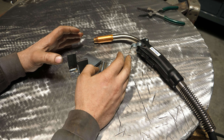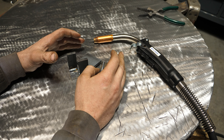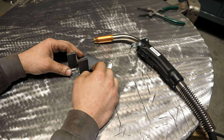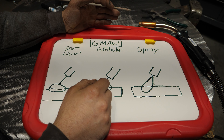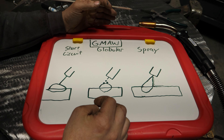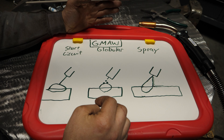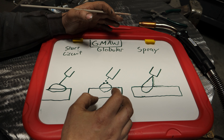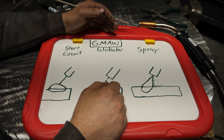Now to understand what spray arc is, you have to understand how wire processes work. So let's go to a quick book learning session. I get asked a lot to talk about the different wire processes and different modes of transfer. I'm going to do a whole video on that in the future, but for right now you need to understand a little bit about what's going on so you understand where spray fits in.